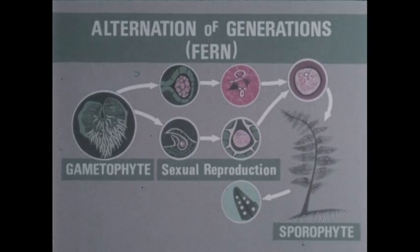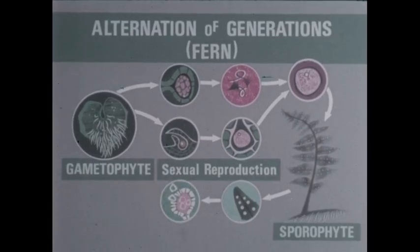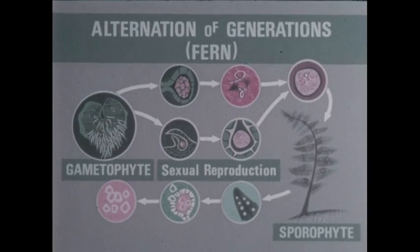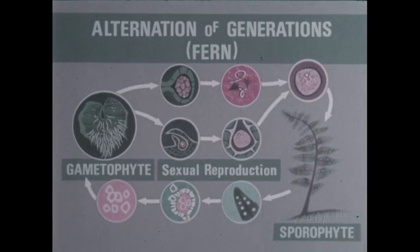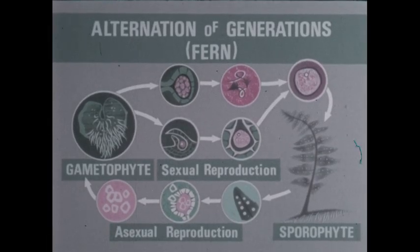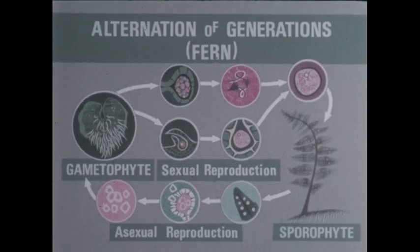On the undersides of the sporophyte leaves are formed asexual reproductive organs, sporangia. These release spores, which germinate, producing fern gametophytes. This asexual reproduction completes the fern life cycle with its alternating gametophyte and sporophyte generations.